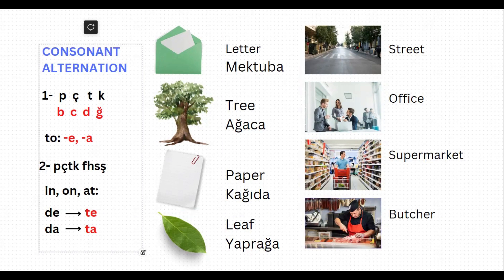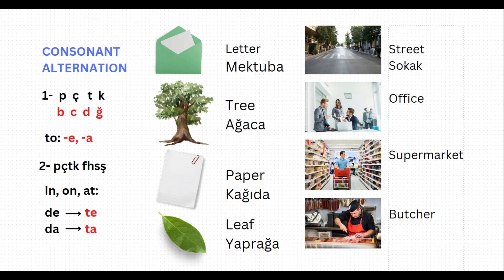Let's practice this rule on these words. Our first word is 'street,' which is 'sokak' in Turkish. If you want to say 'on the street,' then it will be 'sokak-da' normally. But this word is ending with k, which is one of peçeteğe or fehseşe, so this suffix needs to alternate to ta: 'sokakta.' On the street: sokakta.